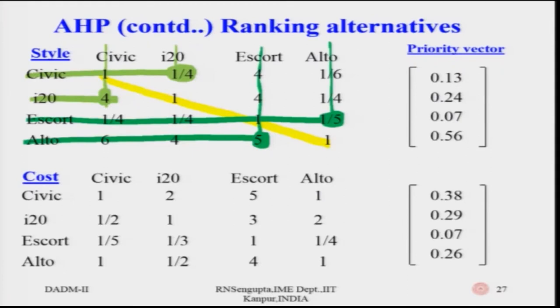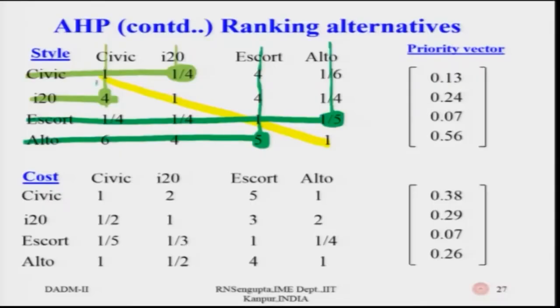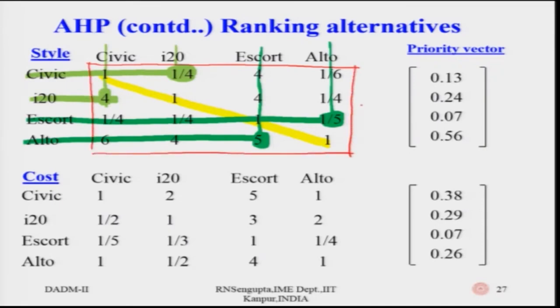You have matrix A; x is the eigenvector and lambda is the eigenvalue. Using A·x = λ_max·x, you solve for the priority matrix and then the priority vector. The priority vector comes out as 0.13, 0.24, 0.07, 0.56, and these add up to one. We follow the principle of normalizing either along the rows or the columns, checking that the sum equals one — whether you normalize along the row or the column, the answer is the same.